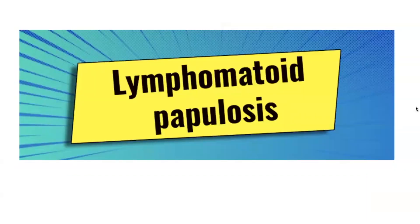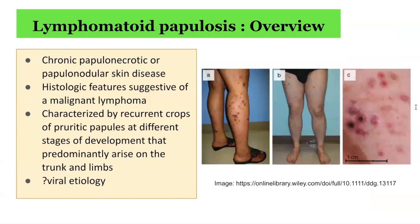Lymphomatoid papulosis is defined as a chronic recurrent self-healing papulonecrotic or papulonodular skin disease with histological features suggestive of a CD30 positive malignant lymphoma. The initiating event in LYP is unknown; several authors have suggested a potential viral etiology, though this has not been proven. The mechanisms involved in the spontaneous disappearance and appearance of skin lesions have not been clearly established; however, it is suggested that the interaction between CD30 and its ligand may contribute to apoptosis of some neoplastic T cells, resulting in subsequent regression of skin lesions.